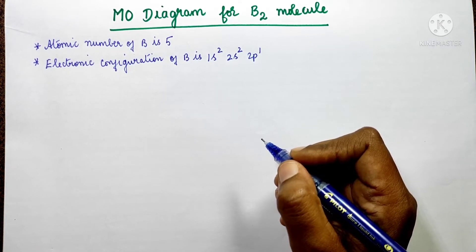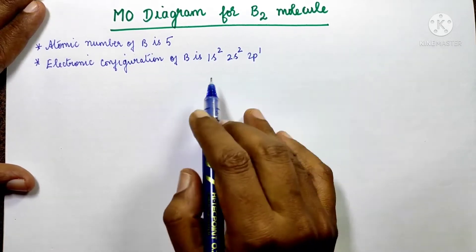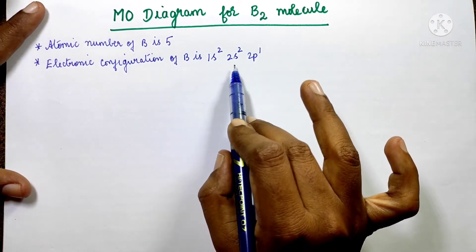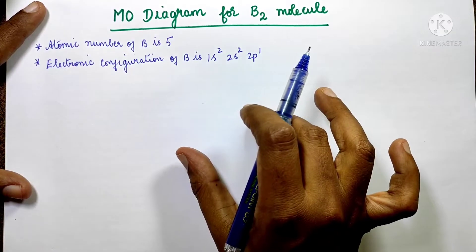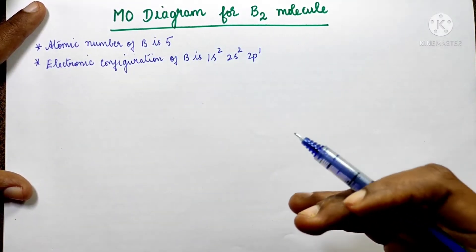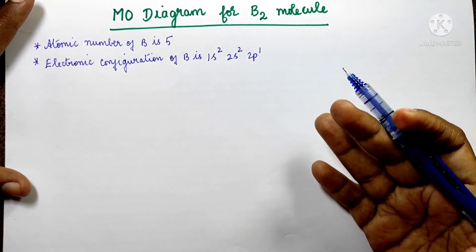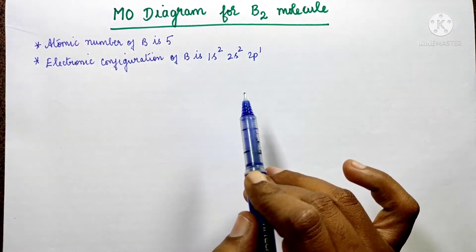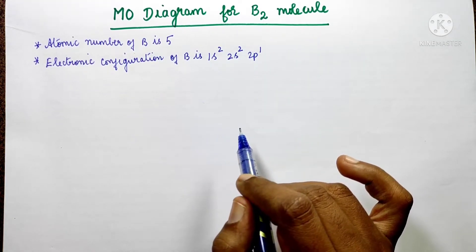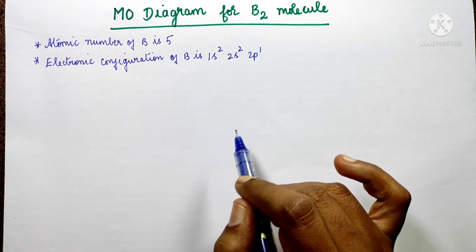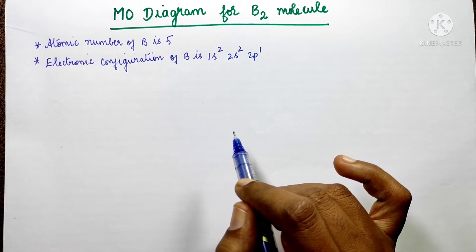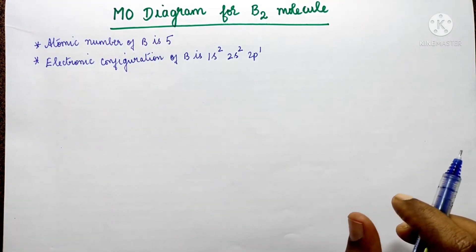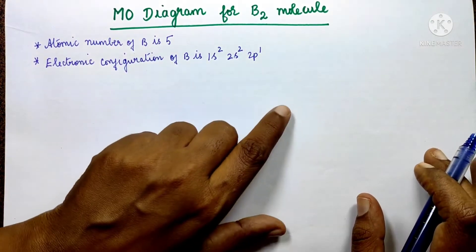For n=2, the 2s and 2p orbitals are involved. When p orbitals are involved, both pi and sigma types of bonds can form. The energy of the pi bond is lower, and the energy of the sigma bond is higher. An energy level order is given to us.